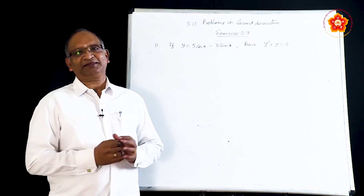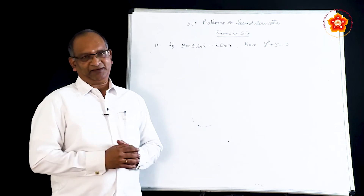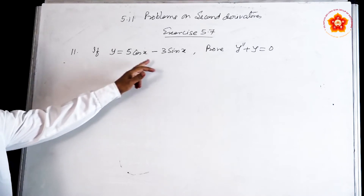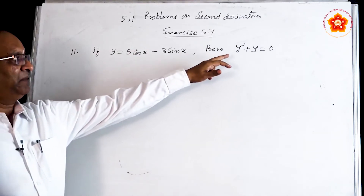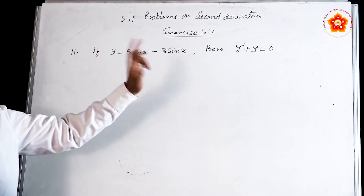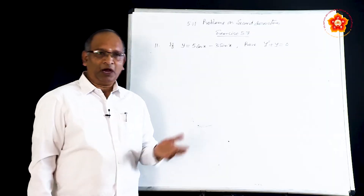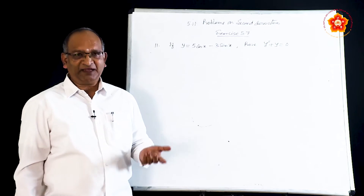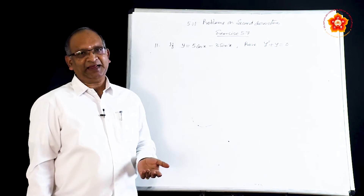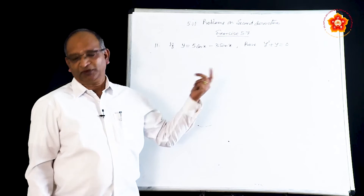In fact in this particular exercise you do not find very difficult problems. The problems are given in a different way. For example, problem number 11: y = 5cos x − 3sin x, and it says prove that y″ + y = 0, where y″ is the second derivative and y is the given function. Very simply, just find the first derivative y′, differentiate it a second time to get y″, and then put the things together to get the answer.